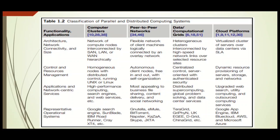The second type is peer-to-peer networks. They connect client machines directly over a network with no central control. Each node can act as a client, a server, or be self-organized. Peer-to-peer is good for file sharing, content delivery, and social networking.